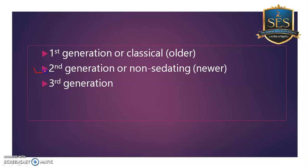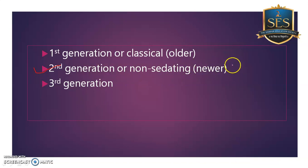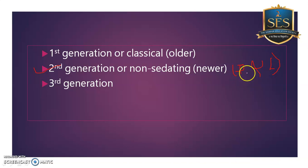Hence, second generation drugs were discovered. Second generation drugs are less sedating. I also discussed in the last lecture that second generation drugs exist in racemic form — that is, a mixture of dextro and levo forms. Later, people isolated only one form which is responsible for the activity.